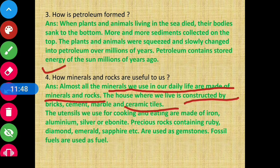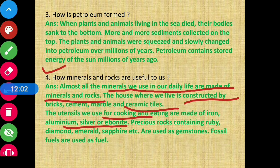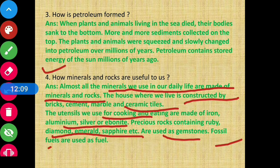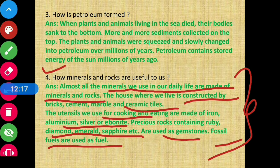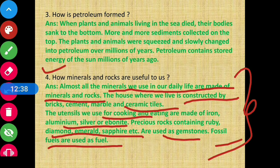Utensils we use to cook and eat food are made of iron, aluminum and silver. There are also precious rocks like ruby, diamond and emerald which are used as gemstones. Then there are fossil fuels which we use as fuel. So rocks are made up of minerals, and ultimately both minerals and rocks are very useful in our day-to-day life.